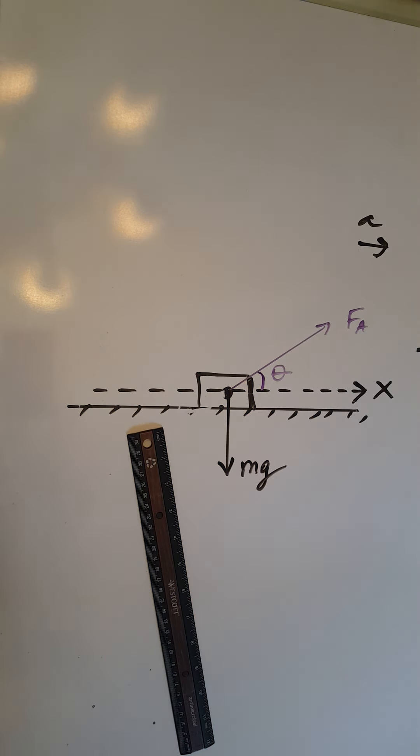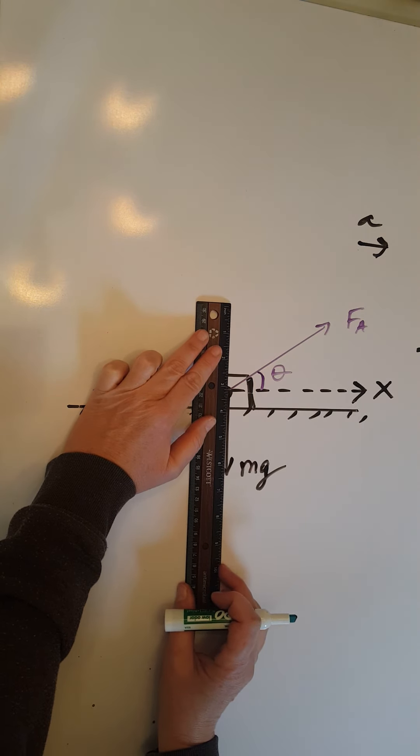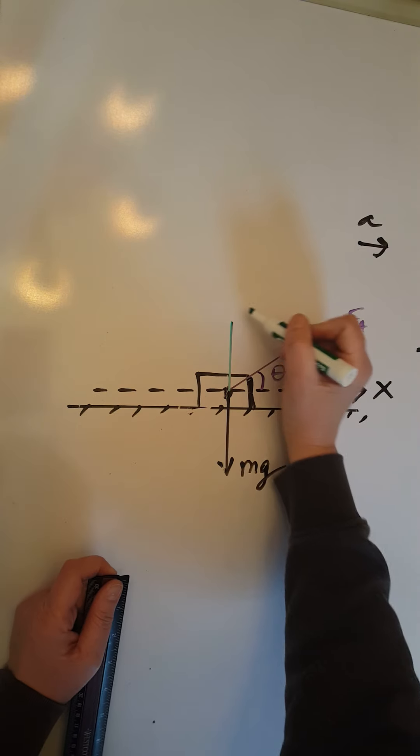We have the normal force going vertically upwards. Since the table is horizontal, the normal force must be vertical. There we go, vertically upwards. In green here, label it little n.